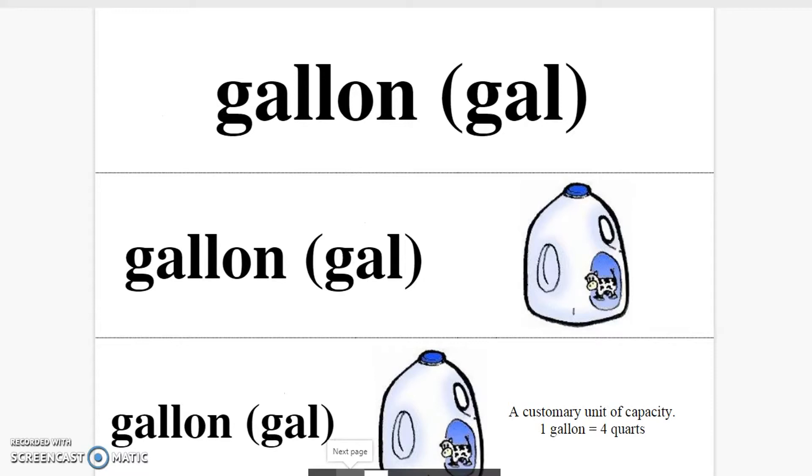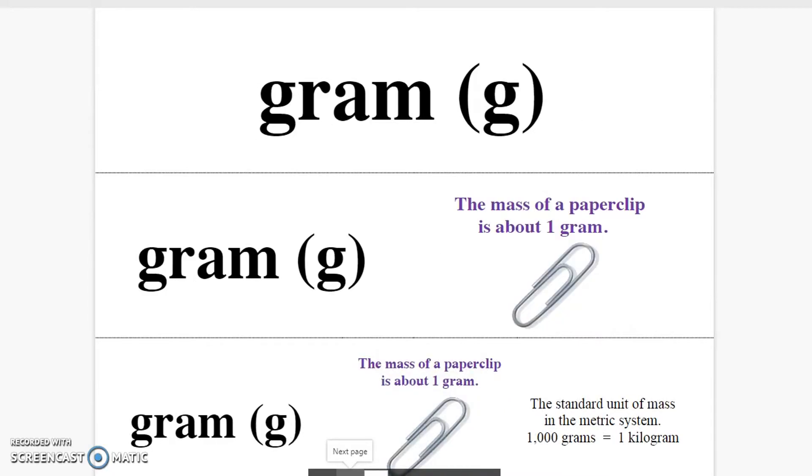Gallon. A customary unit of capacity. One gallon is equal to four quarts. Gram. The standard unit of mass in the metric system. The mass of a paper clip is about one gram.